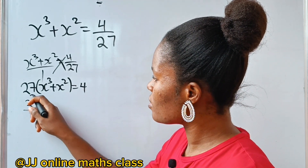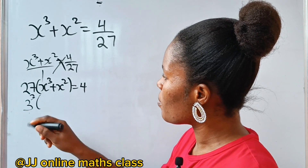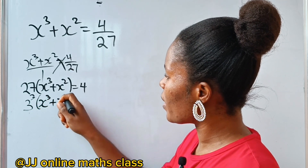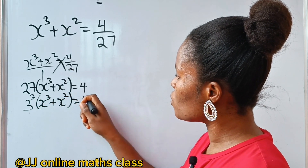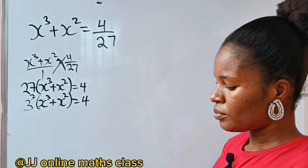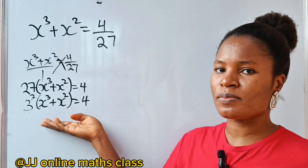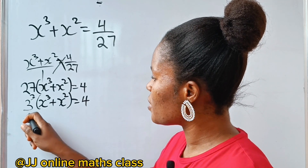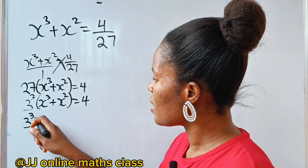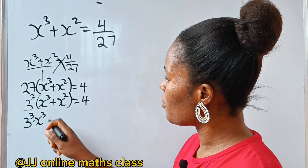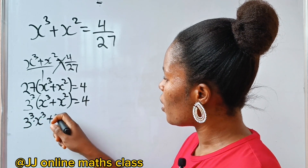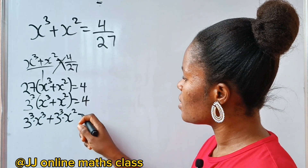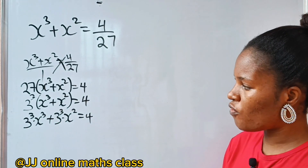Now, 27 is the same thing as 3 cubed — 3 to the power of 3. So we have 3 to the power of 3, in brackets, times x cubed plus x squared, equal to 4. Let's open this bracket: we get 3³ times x³ plus 3³ times x squared, equal to 4.